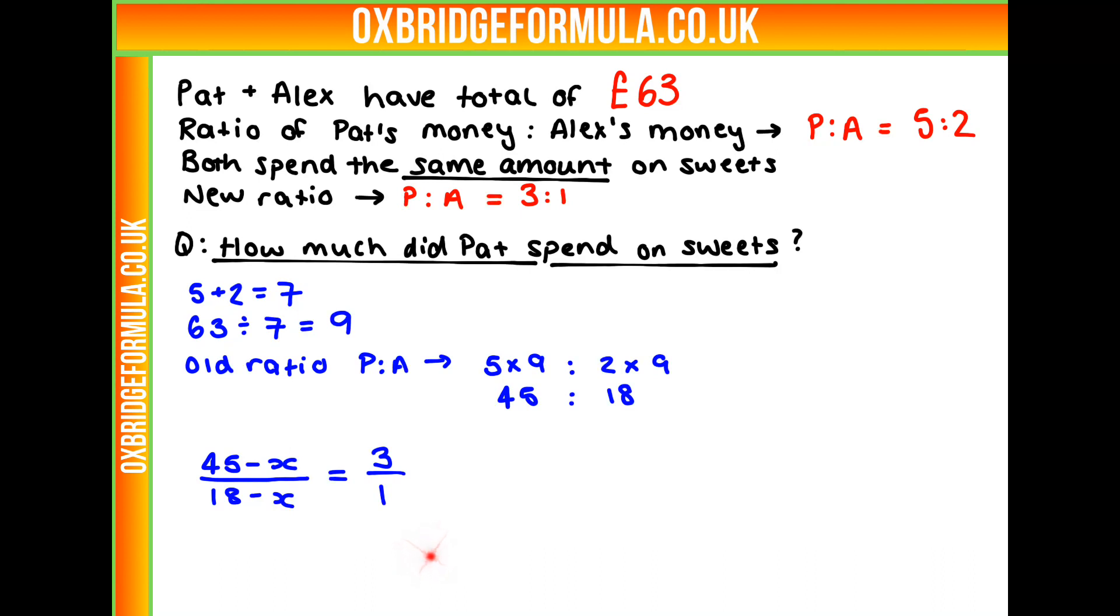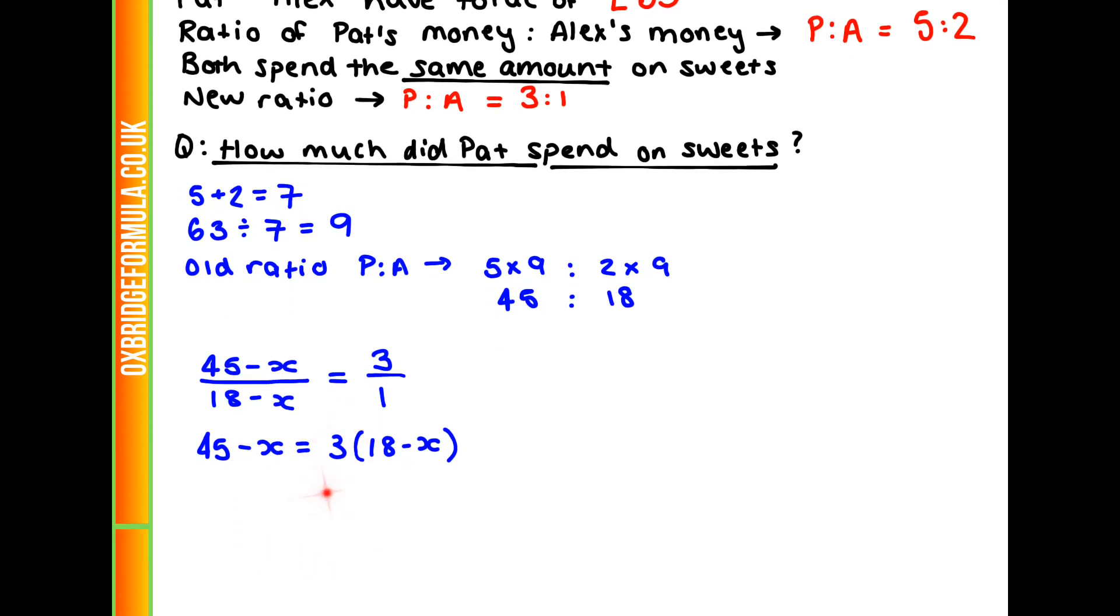First I'll be solving this, and we're going to get rid of this fraction here. To do that, we're going to times both sides by 18 take away X. That's going to leave us with 45 minus X equals 3 times 18 minus X.